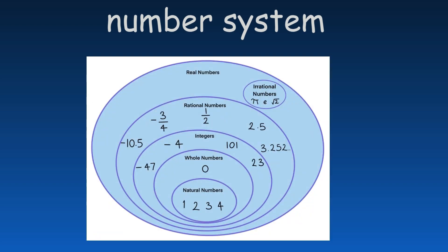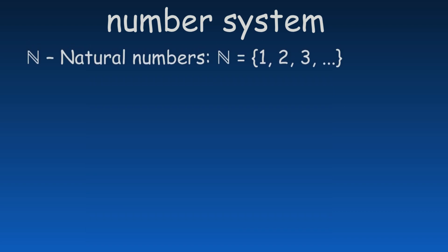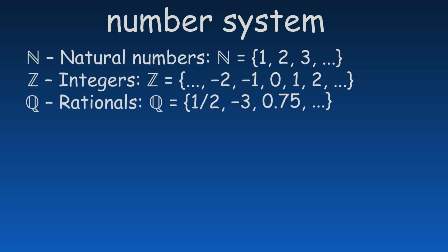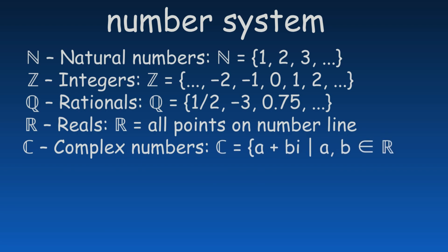Capital letters written in blackboard bold typeface are typically used to represent the standard number systems. N stands for the set of natural numbers. Z represents the set of integers. Q is the set of rational numbers. R denotes the set of real numbers. C refers to the set of complex numbers.